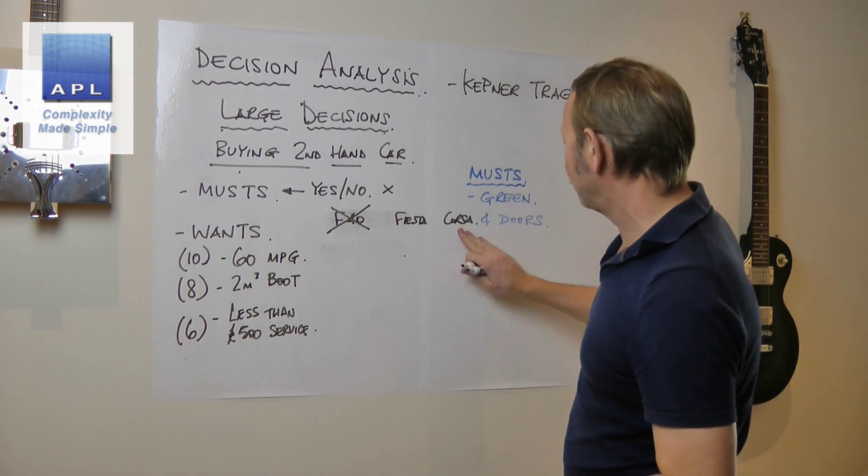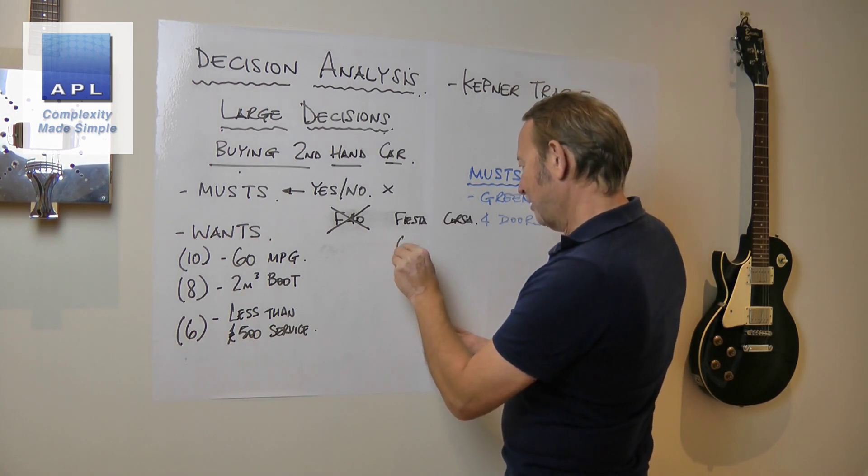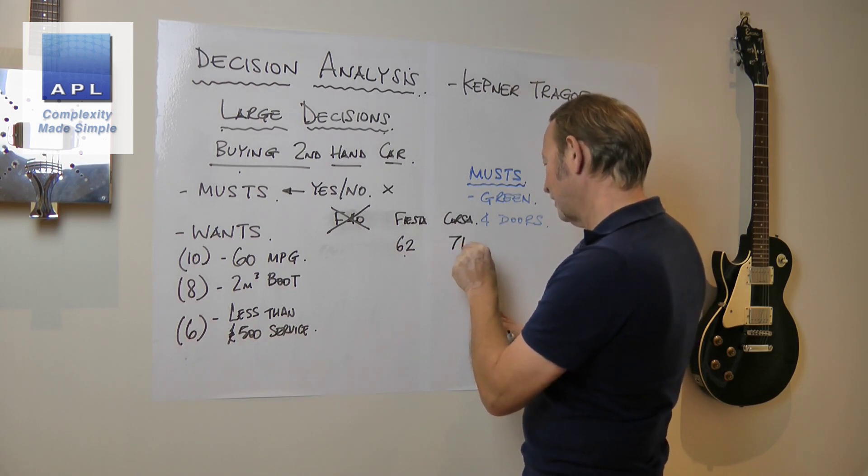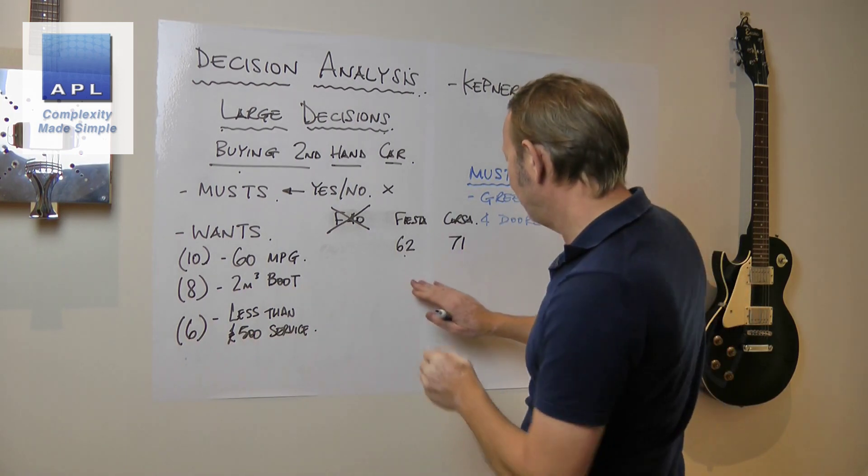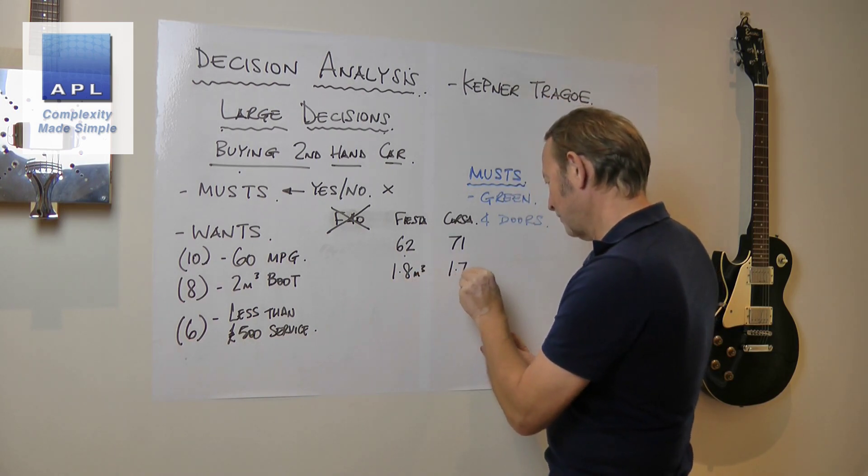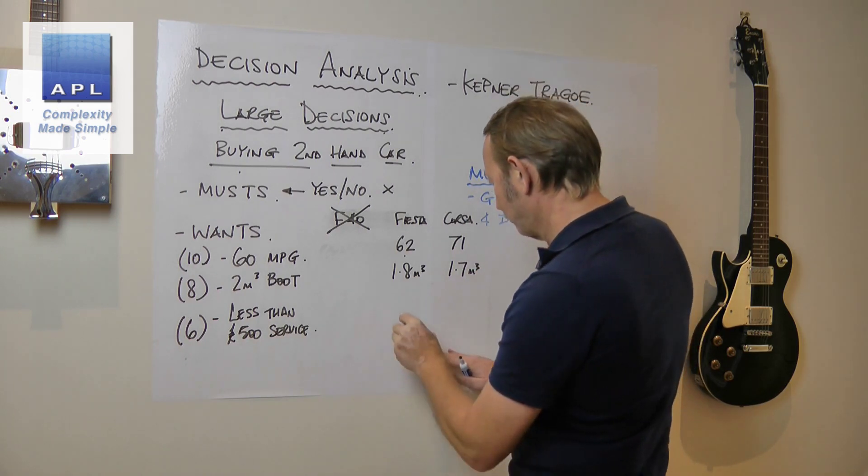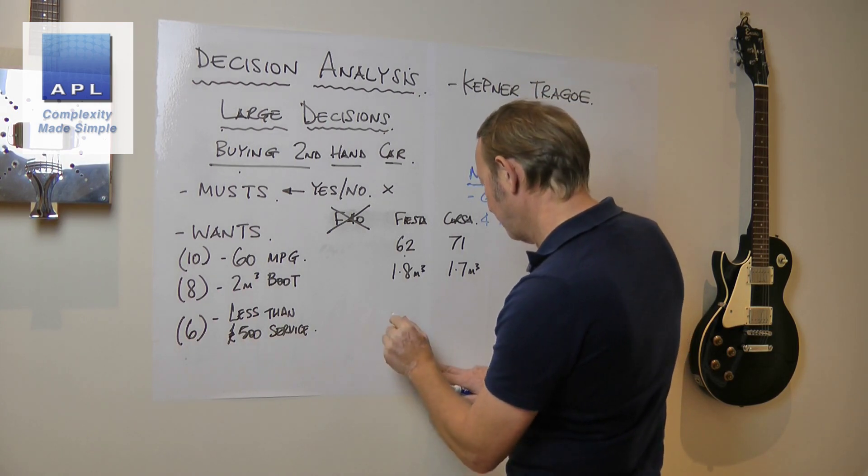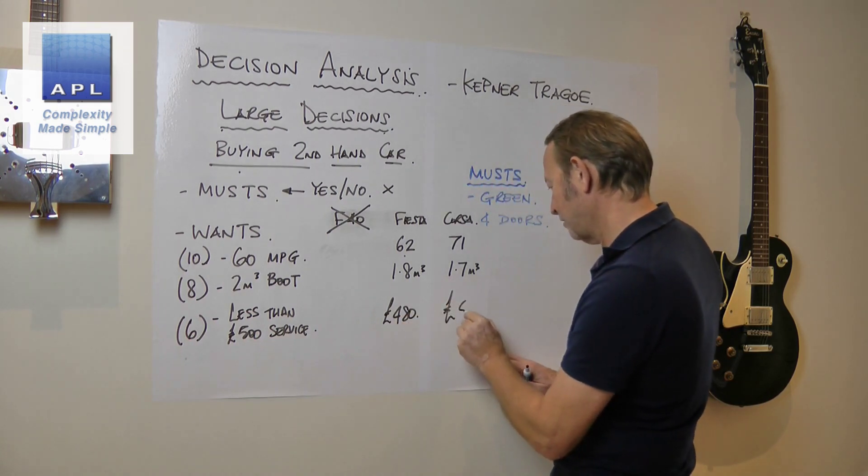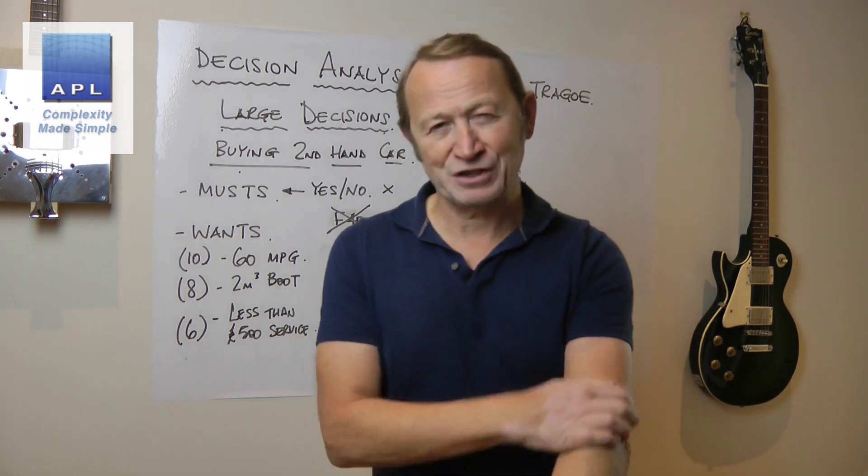Now we look at the features on the Fiesta and the Corsa. Maybe the MPG for the Fiesta is 62, for the Corsa is 71 MPG. The boot on the Fiesta is 1.8, Corsa 1.7. Less than 500 pounds on the service charge annually - the Fiesta is 480, the Corsa maybe 520 because the parts cost more or the service interval.